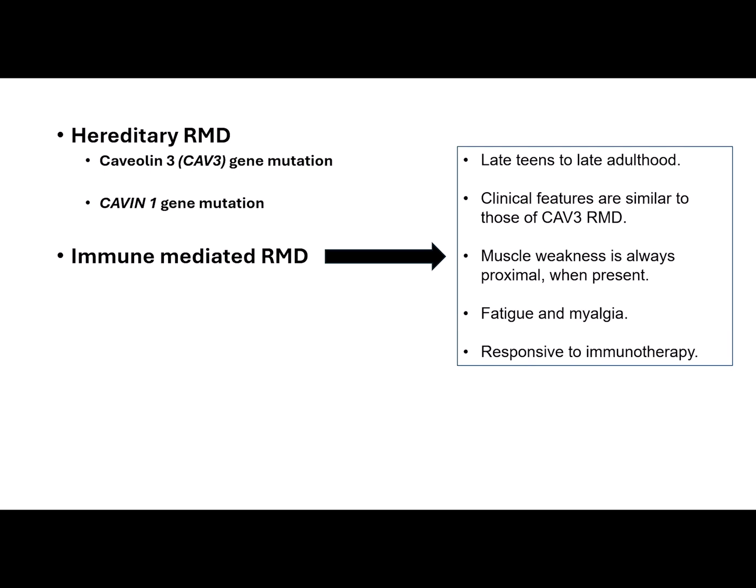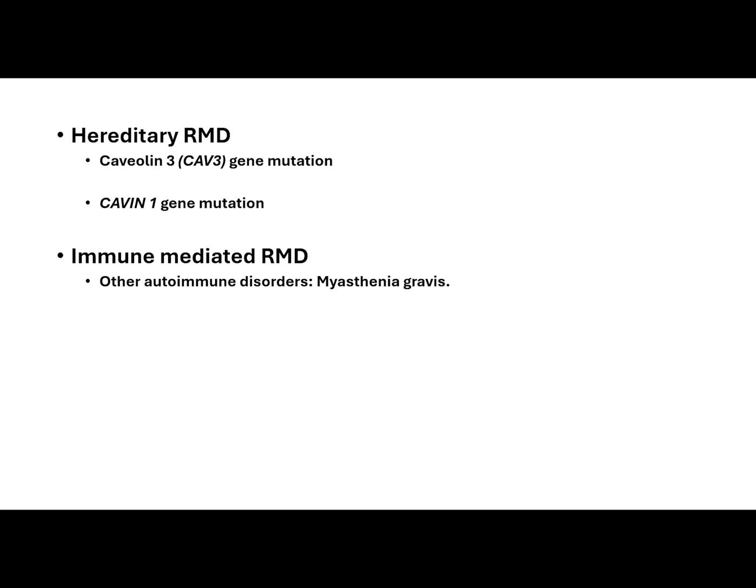Immune-mediated rippling muscle disease often manifests in late teens to late adulthood. Clinical features are similar to those of caveolin-3 rippling muscle disease. Muscle weakness, when present, is always proximal. Fatigue and myalgia are very common and most patients respond to immunotherapy. Immune-mediated rippling muscle disease is often associated with other autoimmune disorders; to date, myasthenia gravis is the most common autoimmune disorder associated with immune-mediated rippling muscle disease.